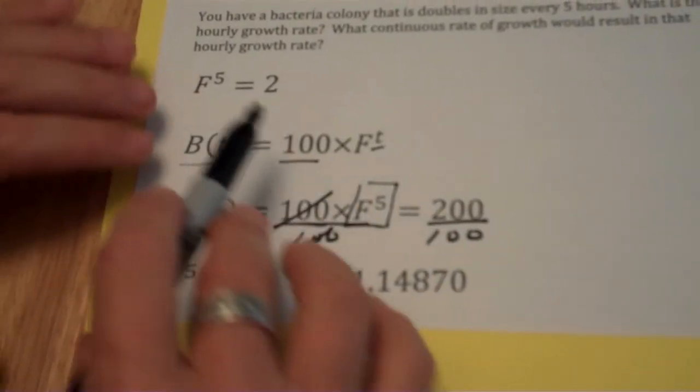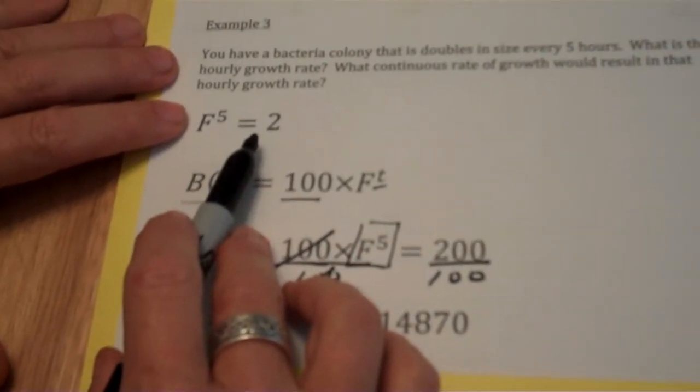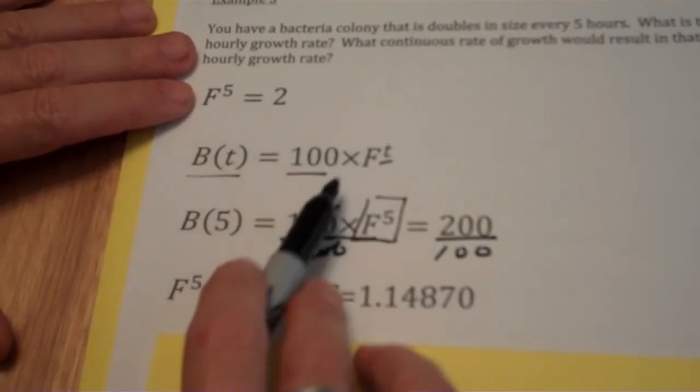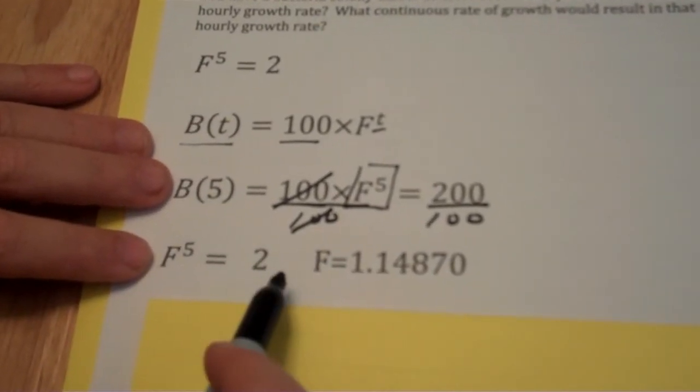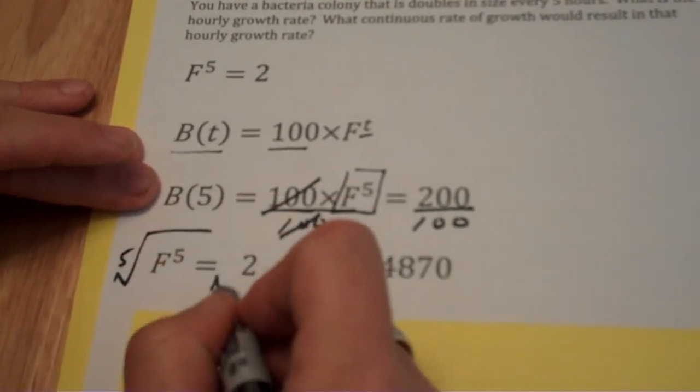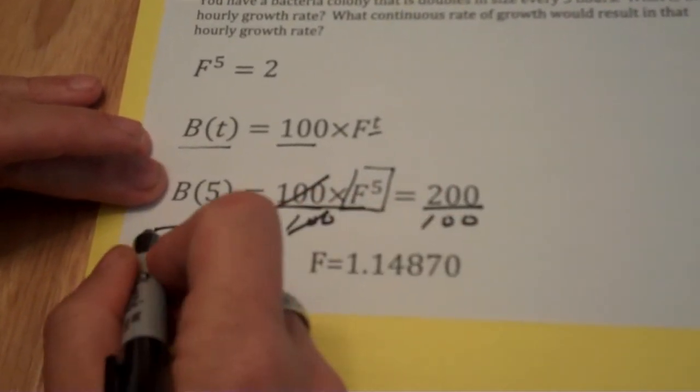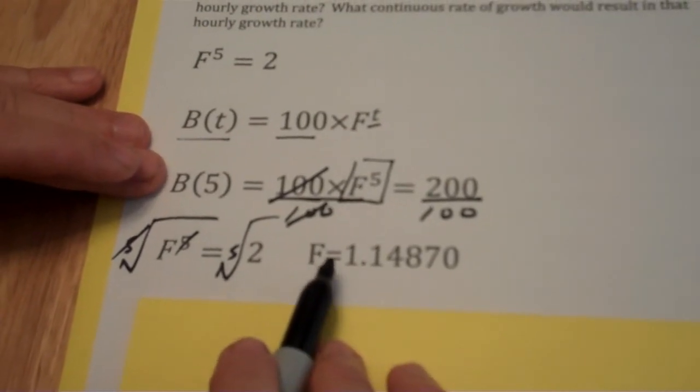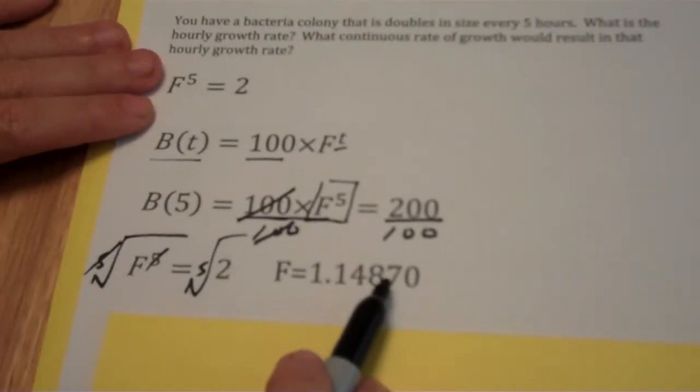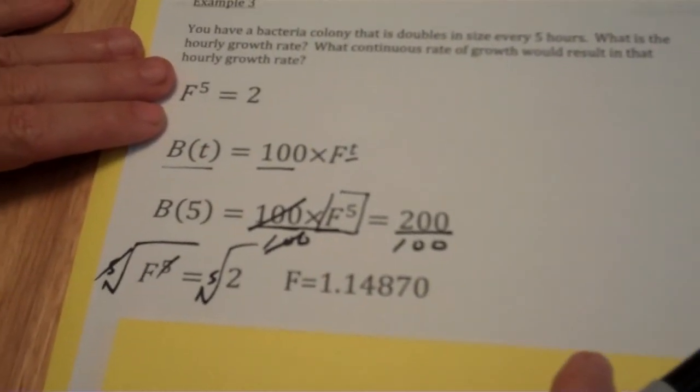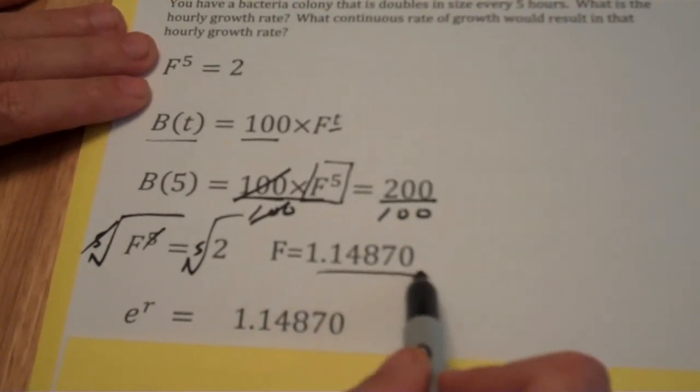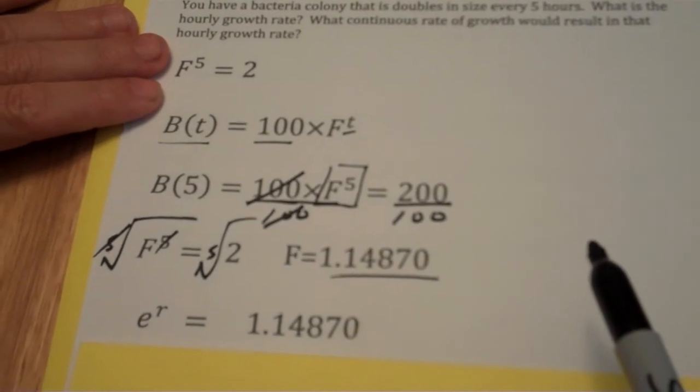Hopefully you were with me, but if not, you've worked it out the long way and gotten to the same point. I will take the fifth root of both sides. My root and power cancel, and I have f equals 1.14870 as my growth factor. That also means my hourly growth rate, if I look at just the decimal portion, would be 14.870%.